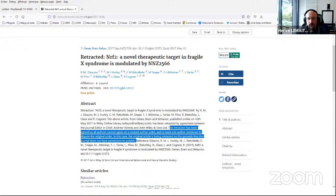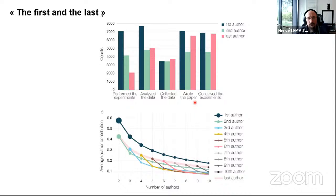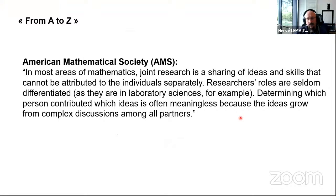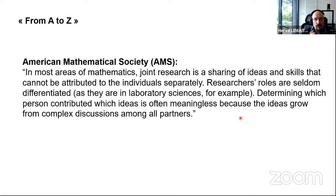Because they couldn't agree. Another way of doing authorship is A to Z — alphabetical order. This is strong in different fields, for example mathematics and physics. Here's the American Mathematical Society: "In most areas of mathematics, joint research is a sharing of ideas and skills that cannot be attributed to individuals separately. Researchers' roles are seldom differentiated as they are in laboratory sciences, and determining which person contributed which ideas is often meaningless because the idea grows from complex discussions among all partners." So that makes sense.